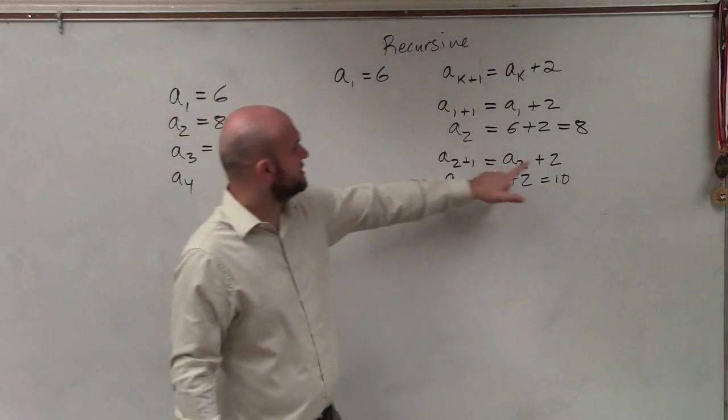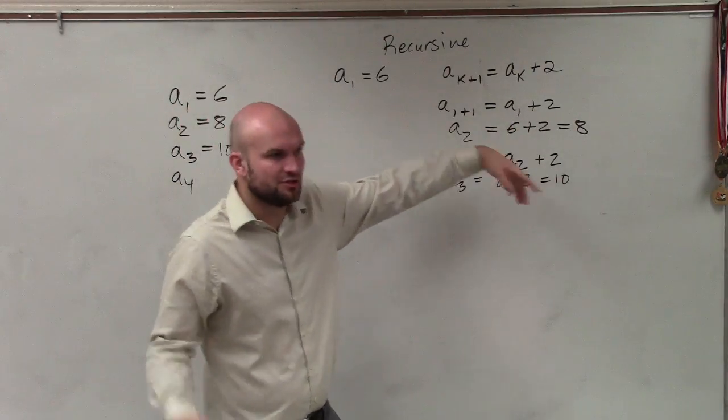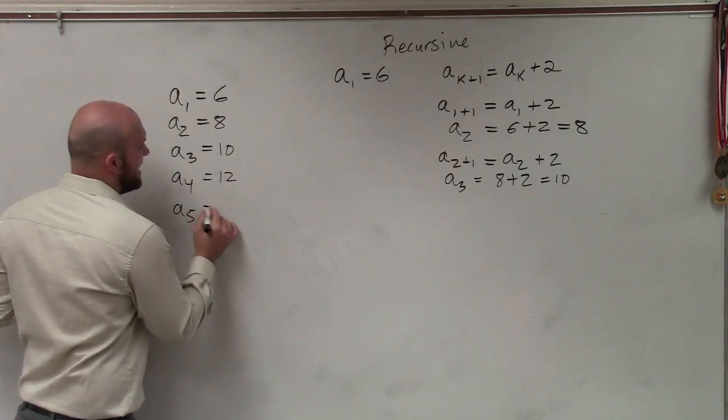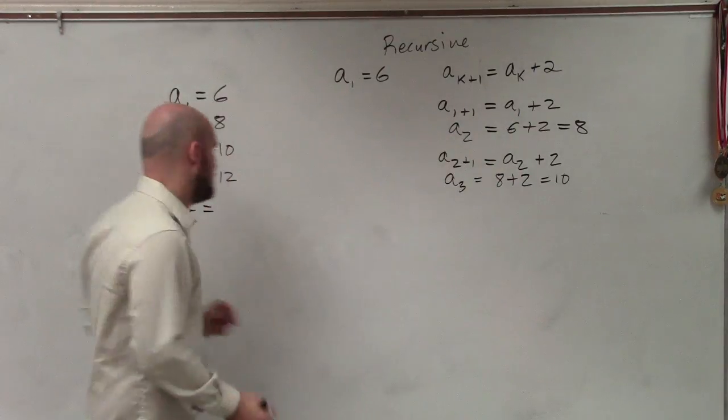A sub four is really just going to be the previous term, ten plus two, which is twelve. A sub five equals twelve plus two, which would be fourteen.